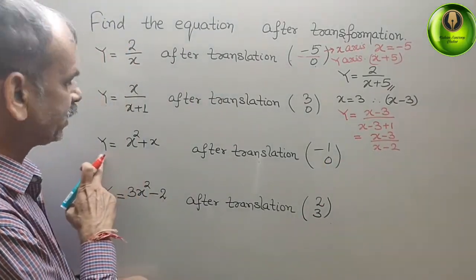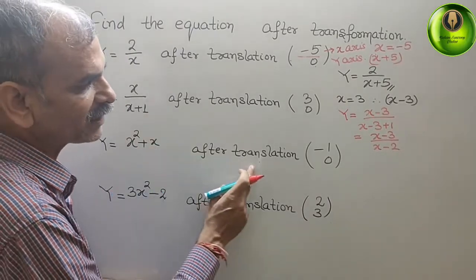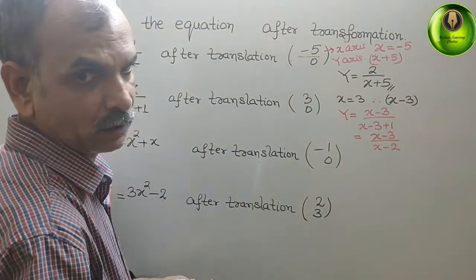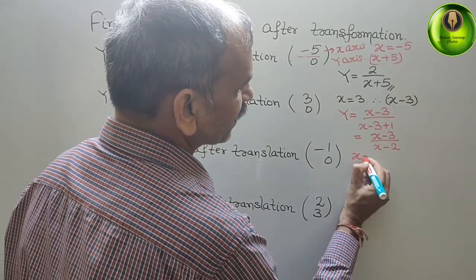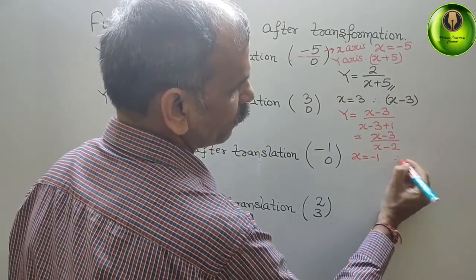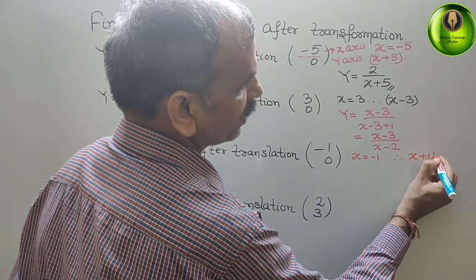Next class. Here they have given y equals x squared plus x. After translation, they have given minus 1. Therefore, we can say x is minus 1. So what is the factor? x plus 1 is the factor.